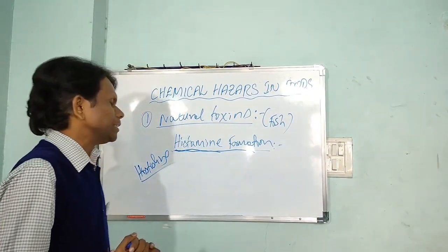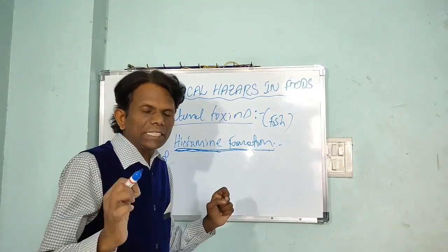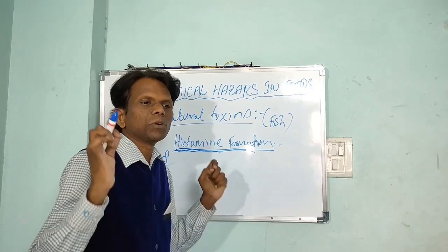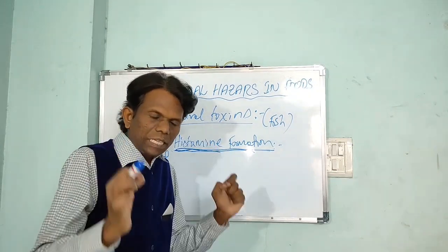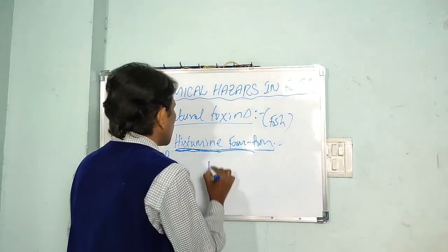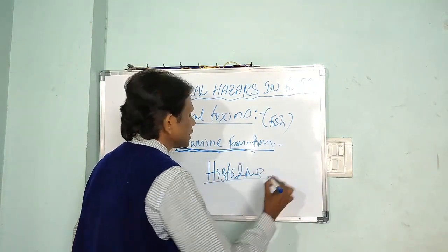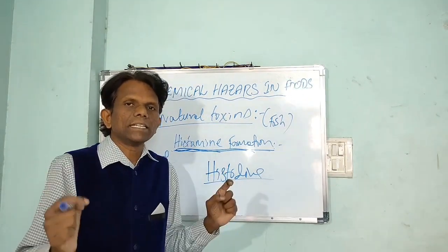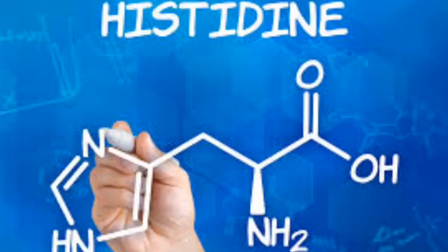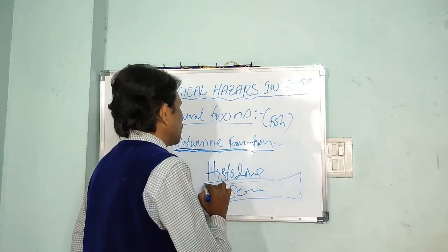Histamine fish poisoning. Especially in fish — most fishes — the fish flesh contains certain kinds of amino acids called histidine. The scombroid species, most scombroid fish flesh contains a higher quantity of the amino acid histidine.